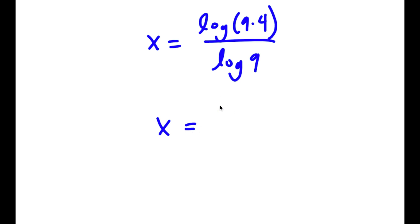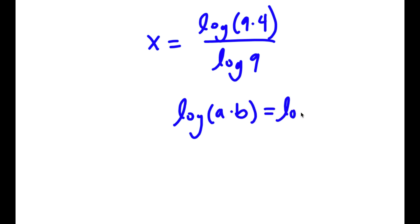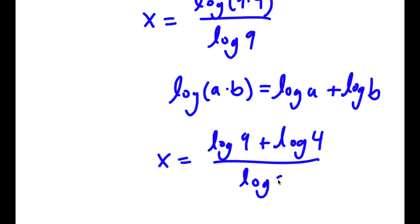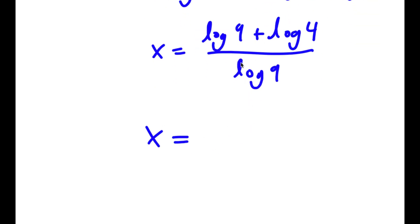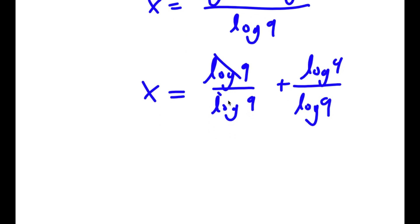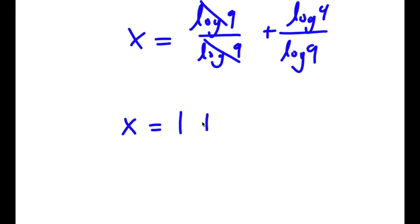And this is the same thing as — if I have something in the form log a times b, this is equal to log a plus log b. So log of 9 times 4 is going to equal log 9 plus log 4, and I have this over log 9. So this is the same thing as log 9 over log 9 plus log 4 over log 9. Log 9 over log 9, these two cancel out, so I have x is equal to 1 plus log 4 over log 9.